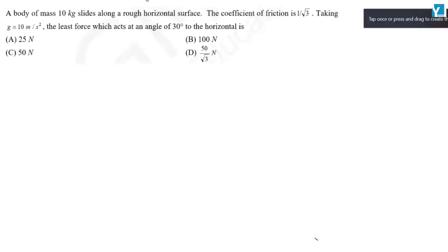A body slides along a rough horizontal surface. This is a horizontal surface. This is a body. The body's mass is 10 kg. A force is acting at an angle of 30 degrees. This force P is acting at 30 degrees.